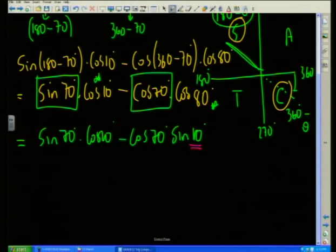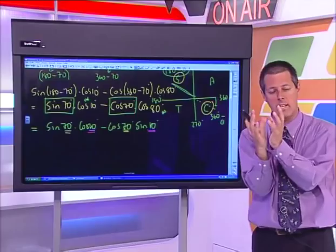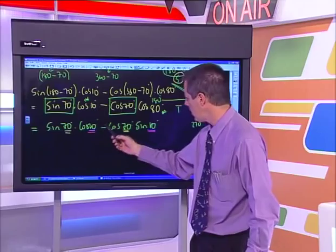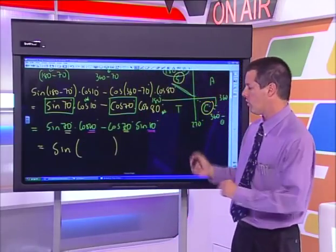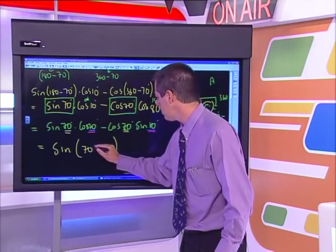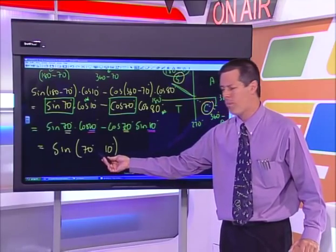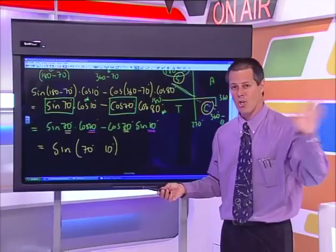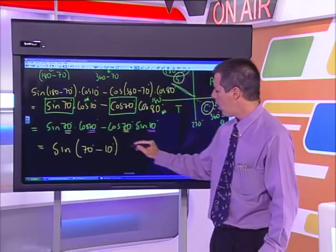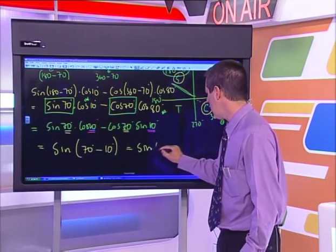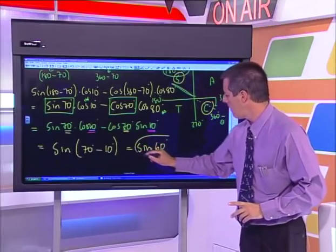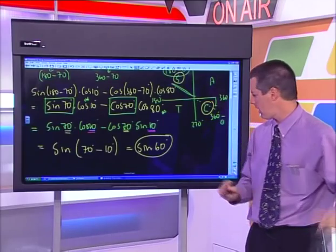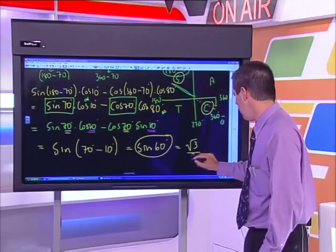I'm ready to contract this together. It's going sine cos, cos sine — that is a sine expansion. So I put in my two repeated angles: 70 and 10. Sine keeps its sign, so I keep the negative inside: sin(70 − 10) = sin(60). I've taken something so mixed up and higgledy-piggledy and contracted it to a function of a special angle. sin(60) = √3/2.